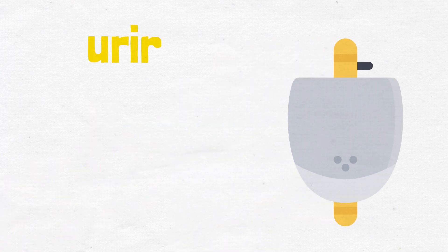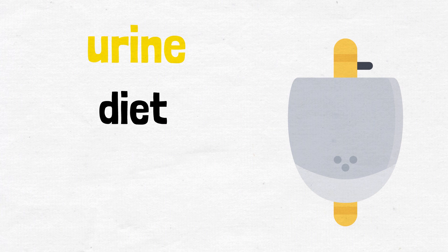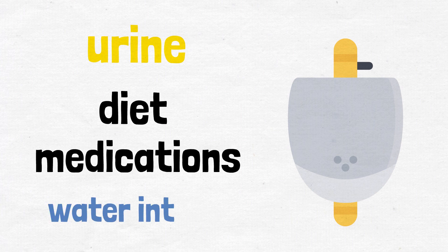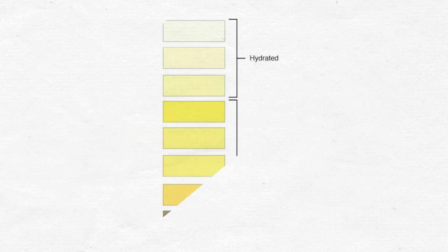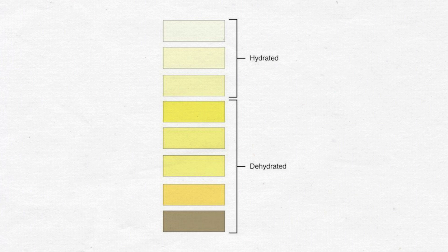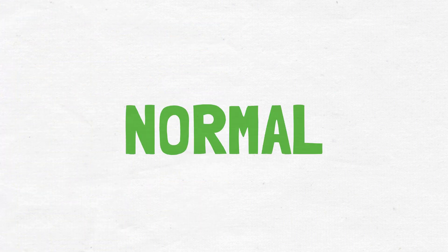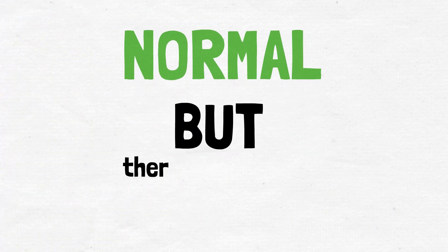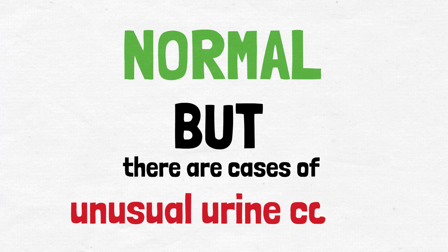The color of your urine can change based on your diet, medications, and water intake. Most of these colors are within the range of what normal urine looks like, but there are cases where unusual urine colors could be causing concern.